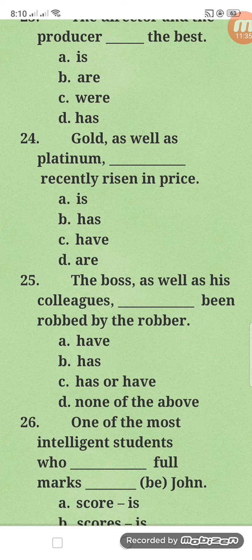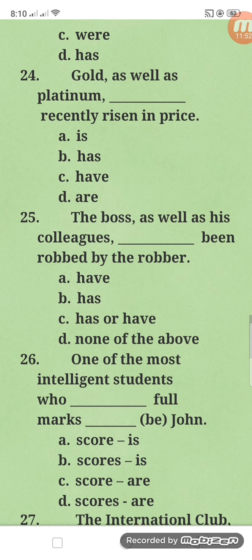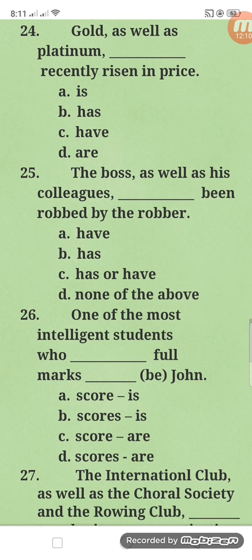Number twenty-four: gold as well as platinum has recently risen in price. 'Risen' is a past participle, so it must be paired with 'has' or 'have' — present perfect tense. Since 'gold' is singular, we use 'has,' not 'have.' We cannot use 'is' because the sentence is in active form, not passive. So the answer is 'has risen.'